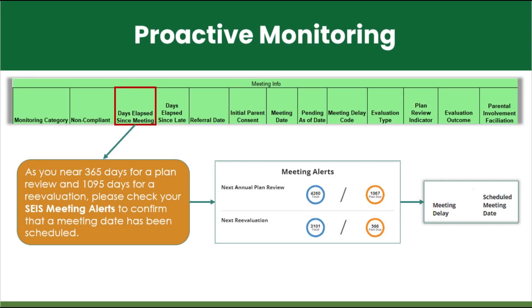The 1621 can also be used for proactive monitoring of upcoming meetings. As the days elapsed since meeting approaches the compliance timelines, you can view your SACE meeting alerts to verify that a meeting has been scheduled.